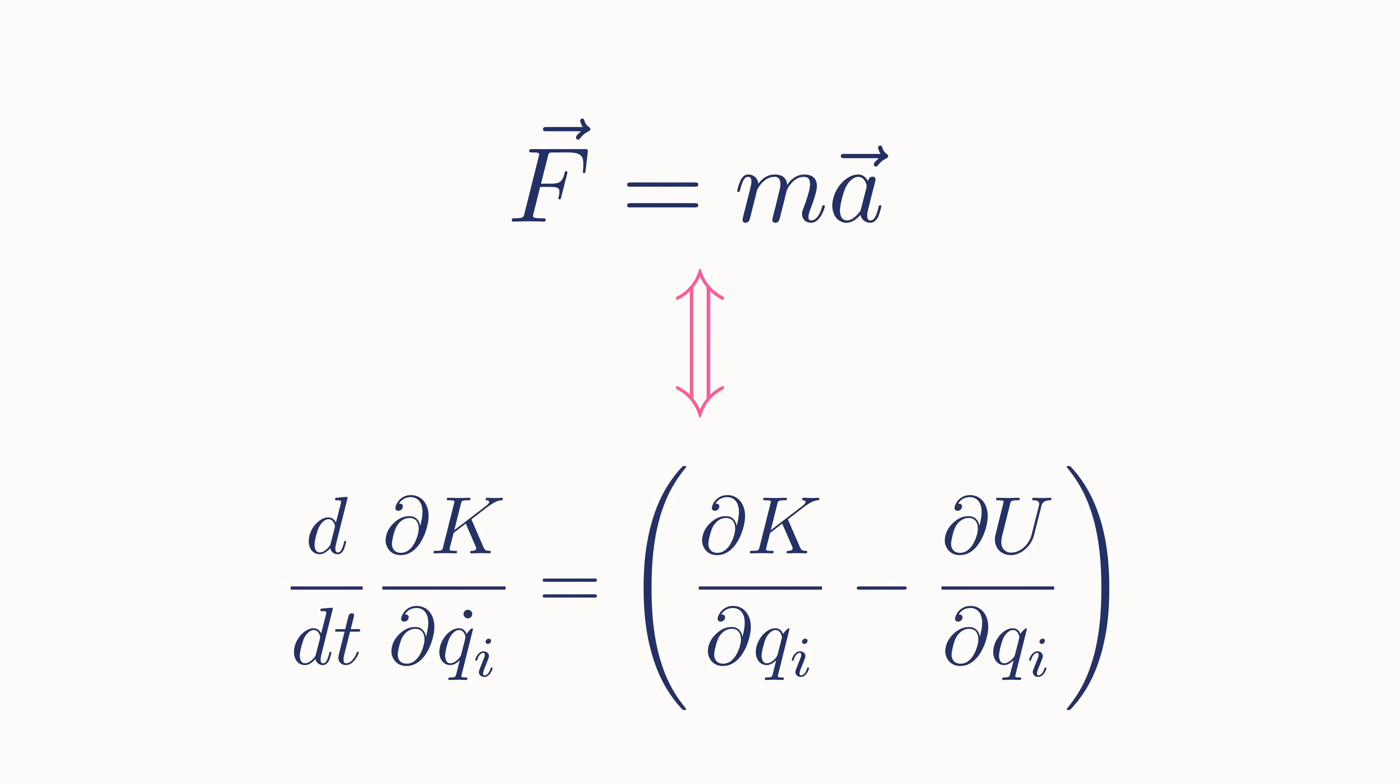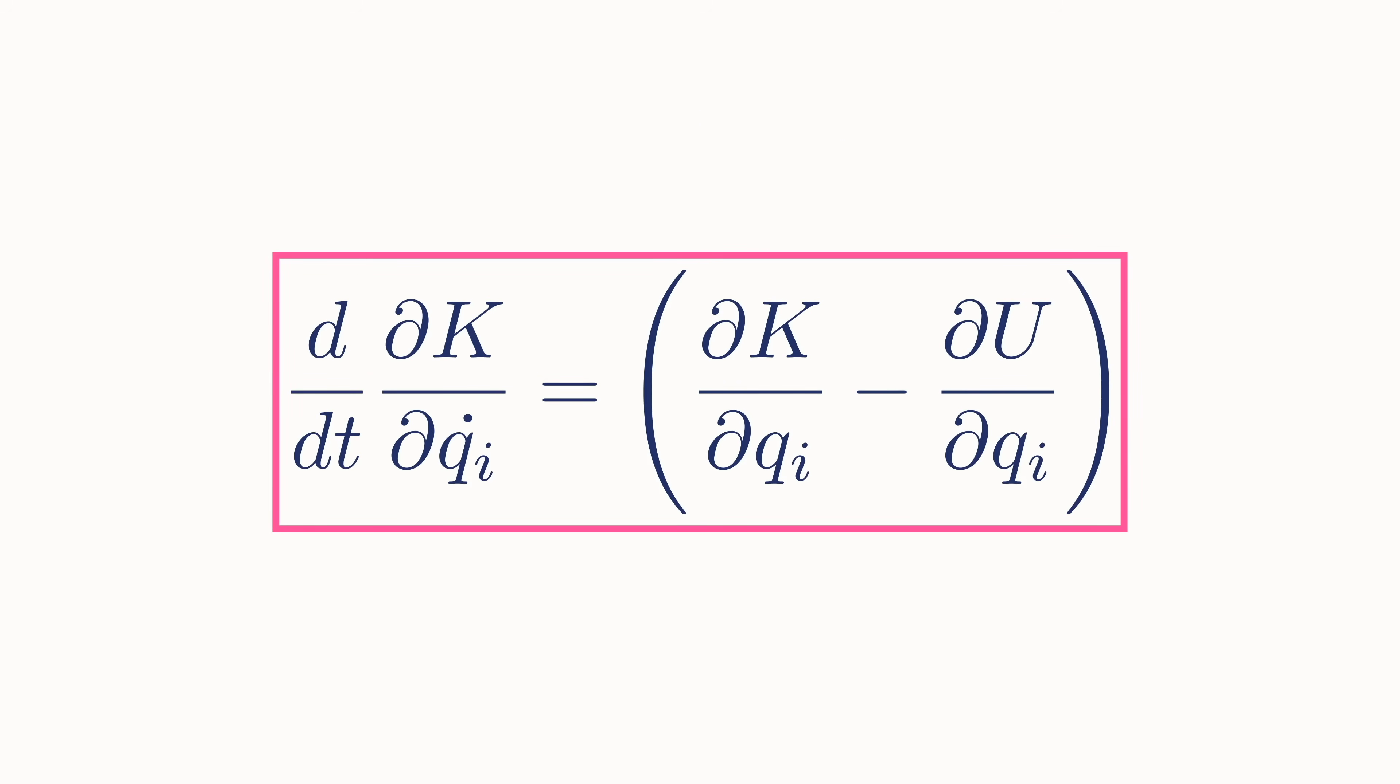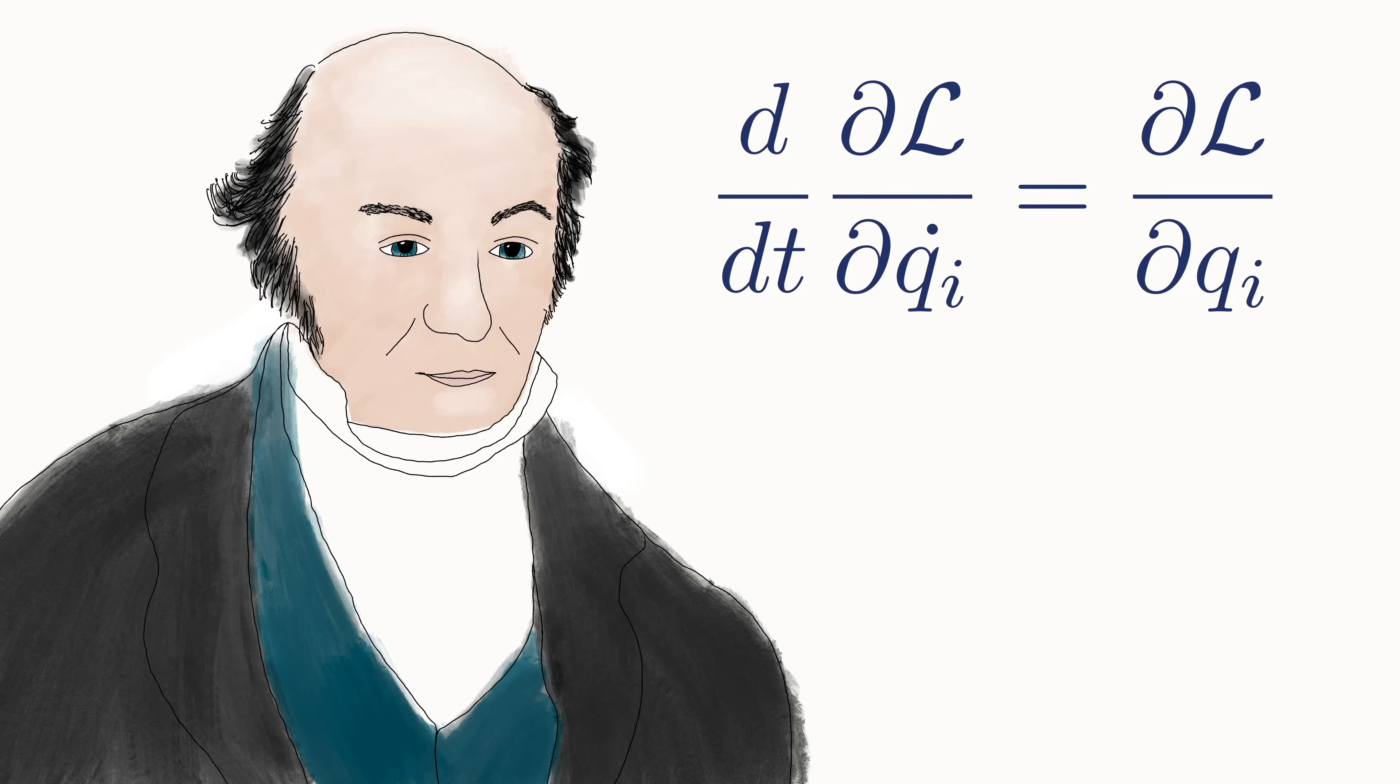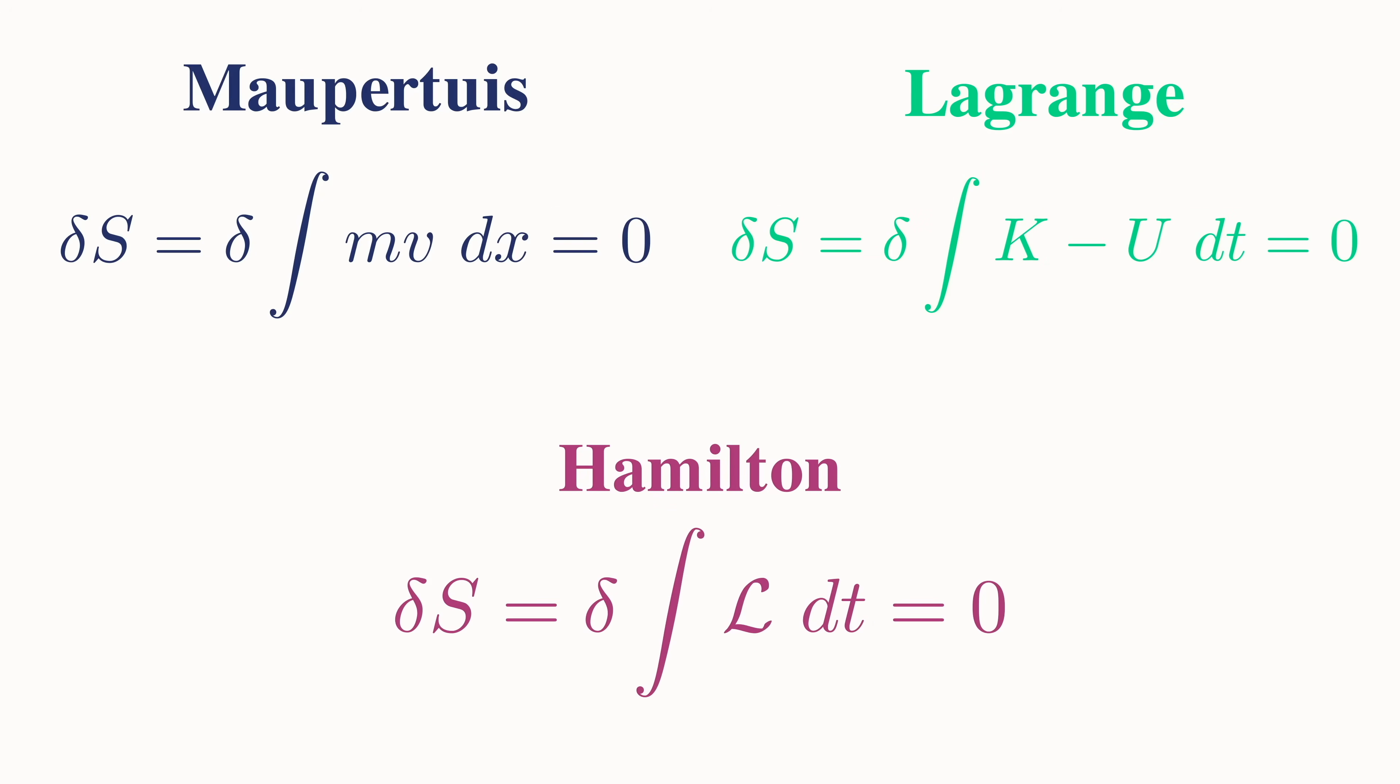It wouldn't be until William Rowan Hamilton appeared that we would get the Euler-Lagrange equations in the way that we know them today, written in terms of the Lagrangian. But Hamilton accomplished something much more for physics than just writing the Principle of Least Action in terms of the Lagrangian. Not only did he put the final touches on Maupertuis' Principle, Hamilton also further developed Maupertuis' initial desire to unite optics and mechanics. In 1833, Hamilton made one of the most important and arguably most underrated discoveries in all of physics.